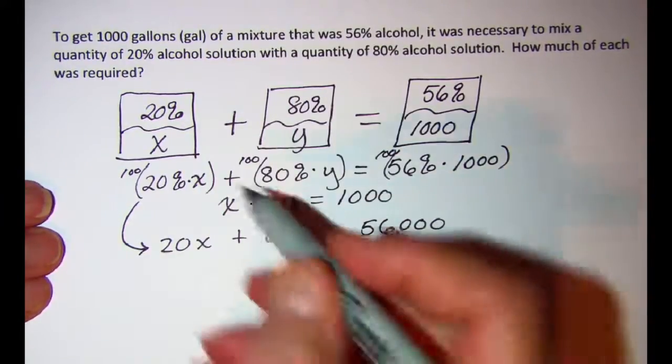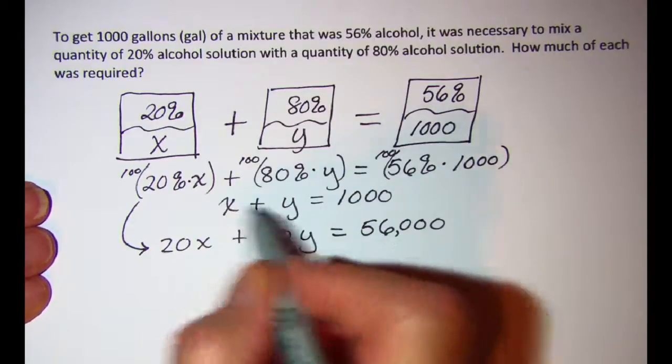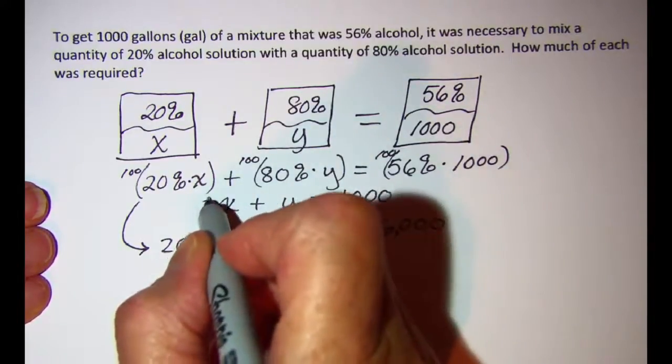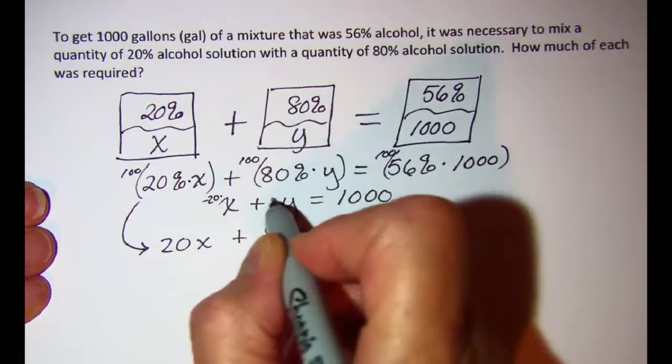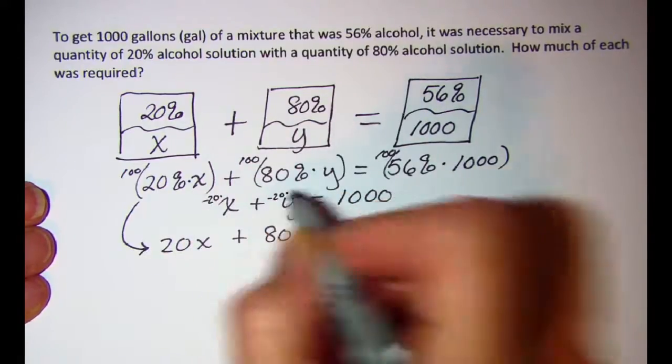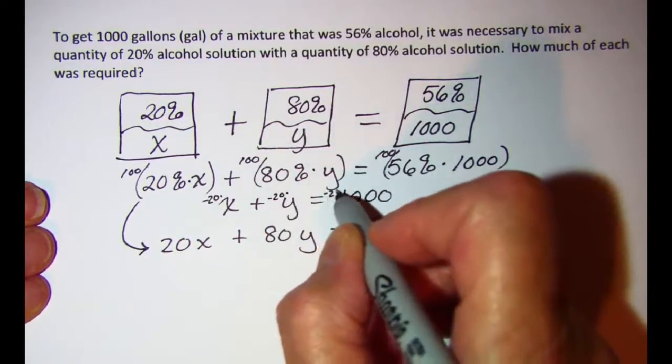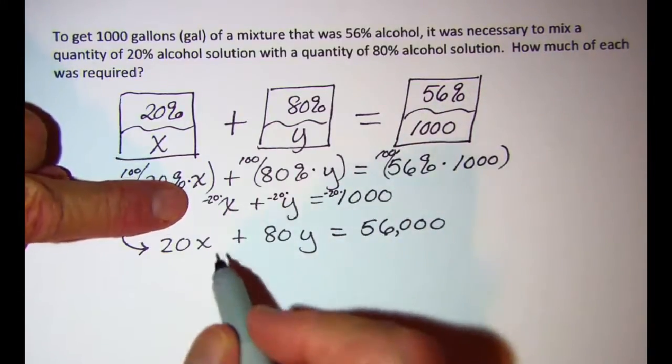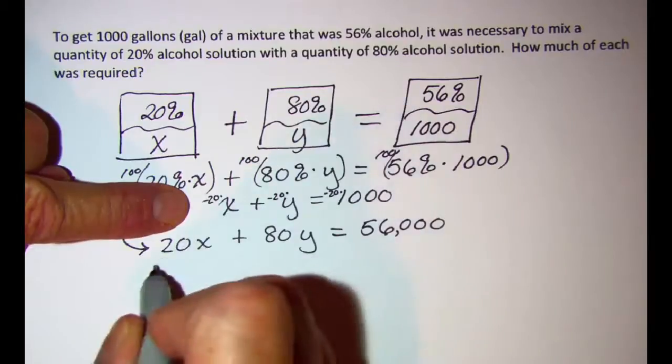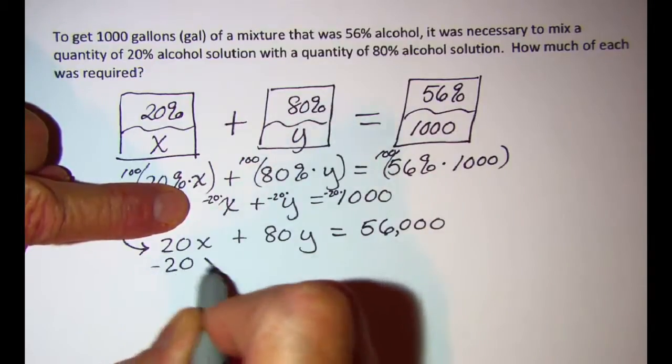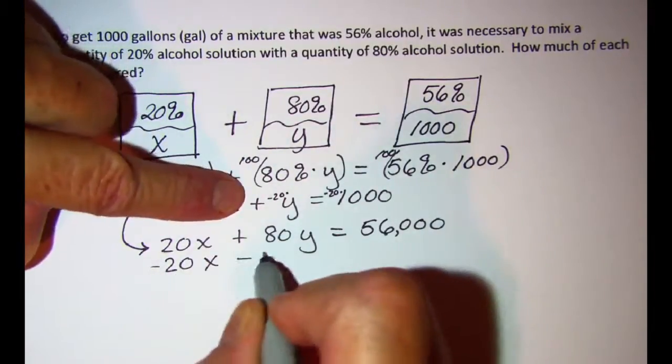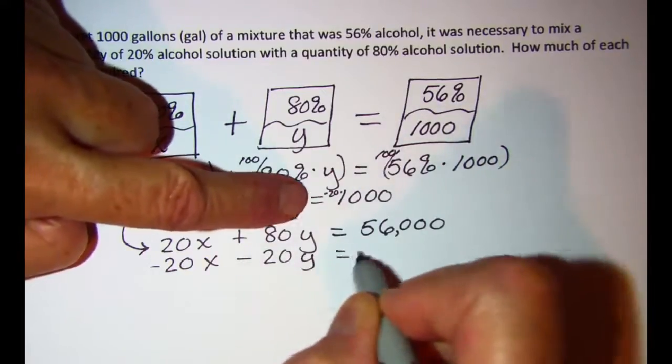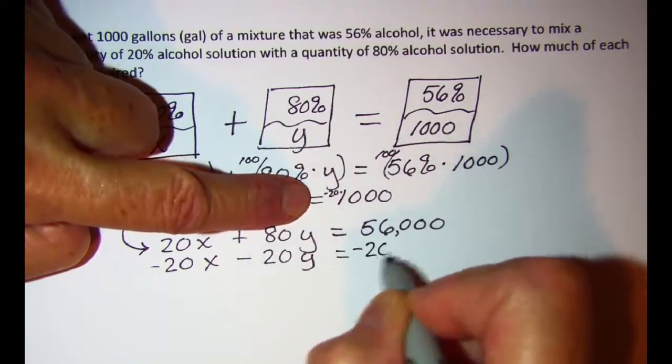Let's go ahead and multiply every term on this equation by negative 20, and I'll use elimination on these two. So this is negative 20x and negative 20y and a negative 20,000.